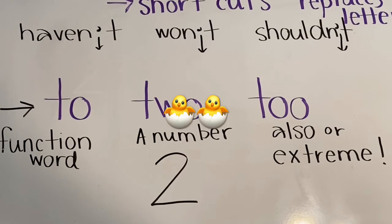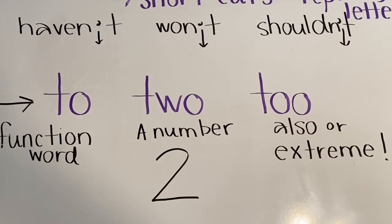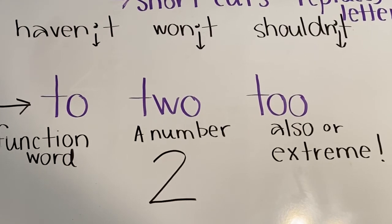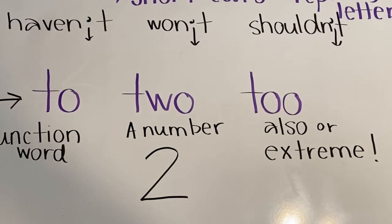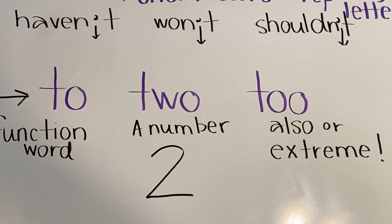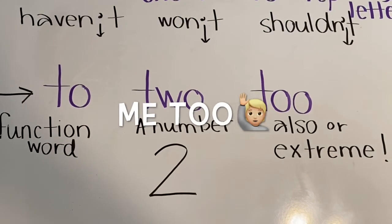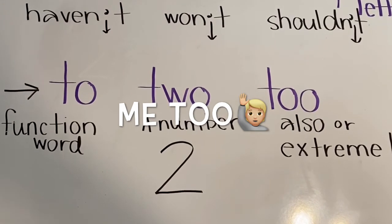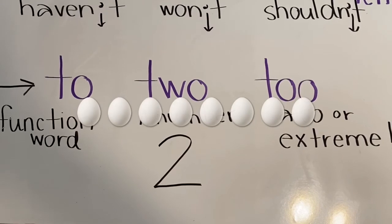The third two has two O's on the end. And we would use it in a sentence for also or something that would be extreme. Let me give you two examples. Little Jimmy said, I want to go to the Easter egg hunt too. Or there are too many Easter eggs to find on this hunt.